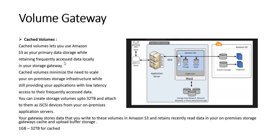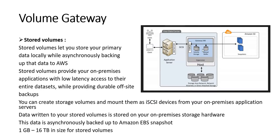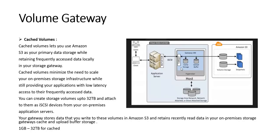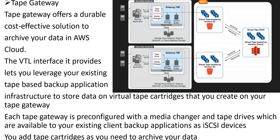In the cached volumes diagram, users reach the application server, which goes to the gateway VM where recently accessed data is cached. The rest is moved on to Amazon S3. You don't have to rely on having very large storage arrays on-premises, as most of your data is stored in AWS — you are only keeping recently read data locally.